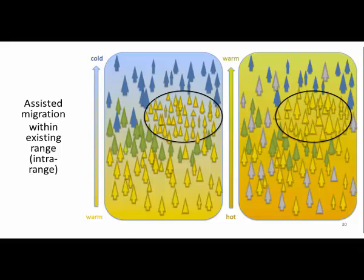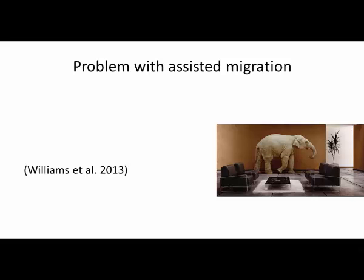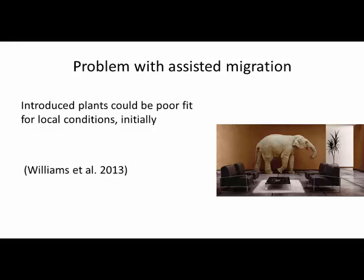Under that scenario, there is a movement of trees from the warm part of the range up into an area that's going to become warmer under climate change. As a result, once the climate changes, there will be more functional trees in that warmer area. However, there's a problem: these plants initially may be a poor fit for their new locations because we're moving them before the climate changes, and there's going to be a period where they're not adjusted and will struggle in establishment.